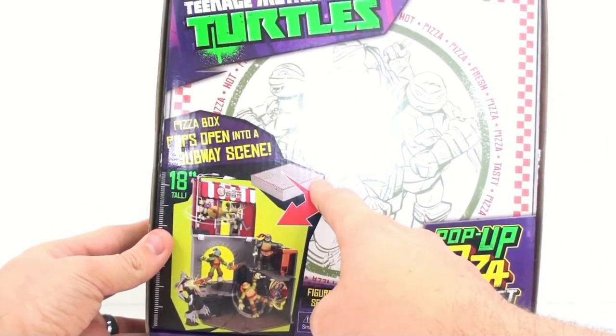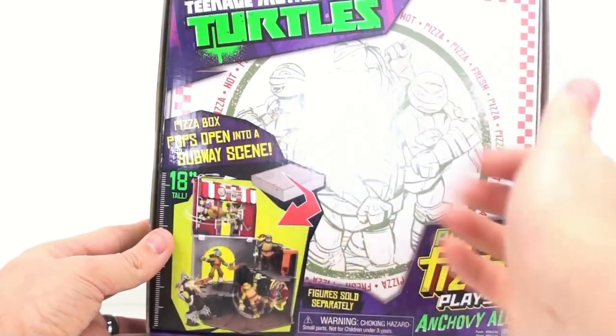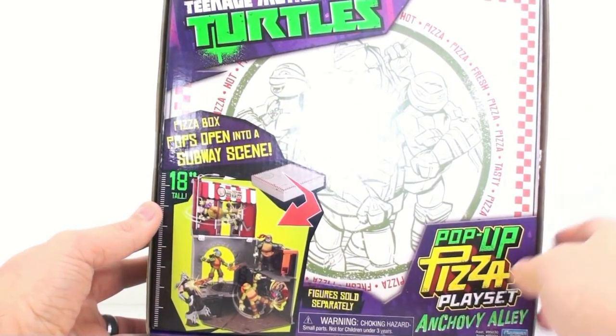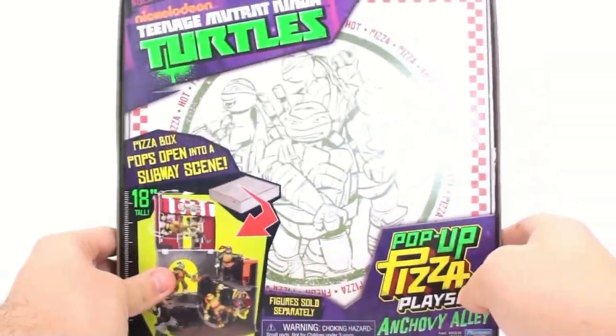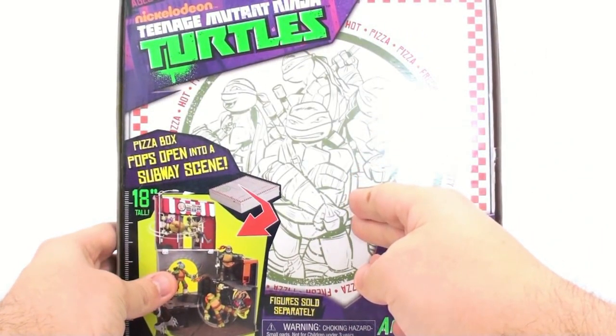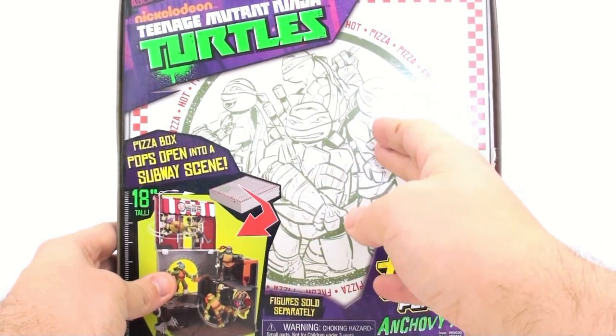As you can see, it folds up. It says right here that it's a pizza box that pops open into a subway scene, which is really very cool. It plays on the whole pizza angle. You've got a real nice image here of the turtles: Leonardo here on the front, Raphael, Donatello, and of course Michelangelo.